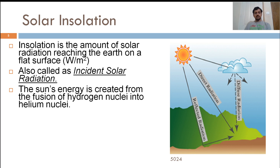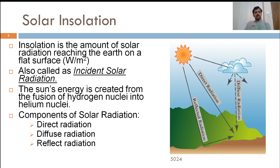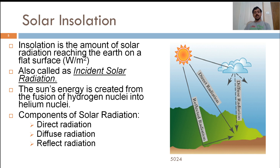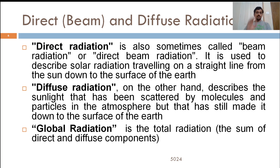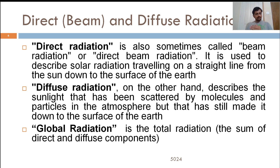The Sun's energy is created from the fusion of hydrogen. Direct radiation is also known as beam radiation or direct beam radiation — it describes solar radiation traveling in a straight line from the Sun to the surface of the Earth. Diffuse radiation is the scattered form of beam radiation by molecules and particles present in the atmosphere that makes its way down to the surface. Direct radiation plus diffuse radiation is called global radiation.